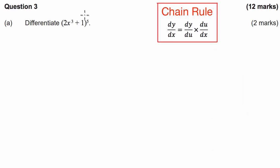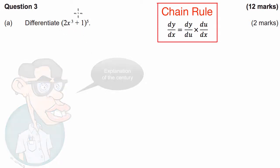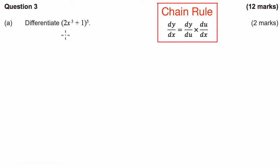The chain rule is used when we're trying to differentiate functions which in themselves contain other functions. For example, in this question here we've got a cubic function, 2x cubed plus 1, which is contained within a fifth power function — something to the power of 5. So you've got a function contained within a function, and that should be the flag that we're going to be using the chain rule here.